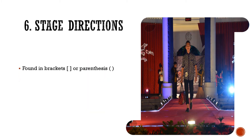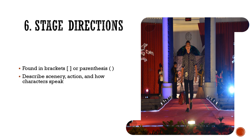Stage directions are found in brackets or parentheses. Jadi biasanya dalam sebuah naskah drama itu, ditemukan dalam kurung — di dalam kurung itu tertulis dia harus melakukan apa. Misalnya dia harus menangis, sambil berjalan, sambil bersiul — itu namanya stage directions. Jadi arahan di atas panggung. Jadi itulah enam elemen pertama dari drama.